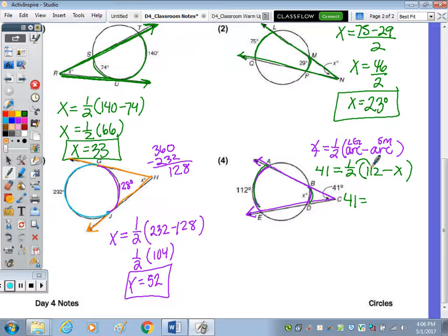So 41 equals distributing half of 112. Well, half of 100 is 50. Half of 12 is 6. So 56 minus 1 half X. Subtract the 56. 41 minus 56 would be a negative 15.